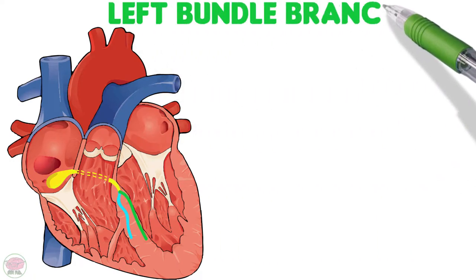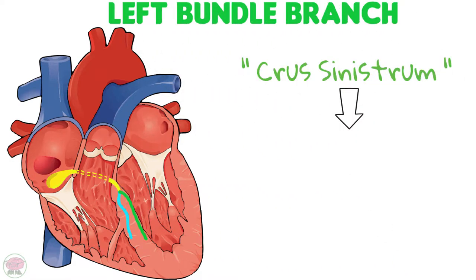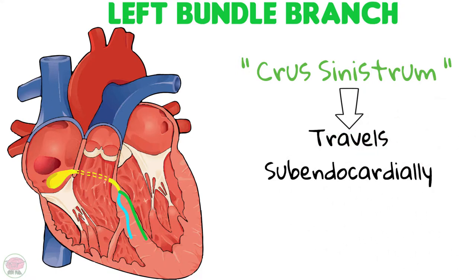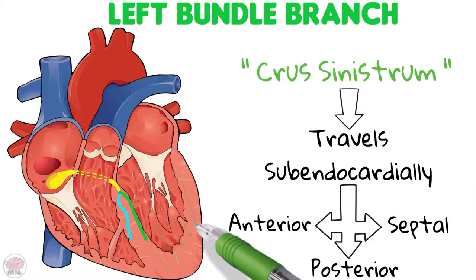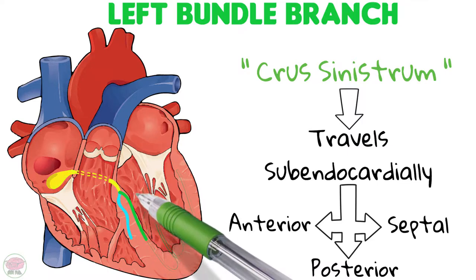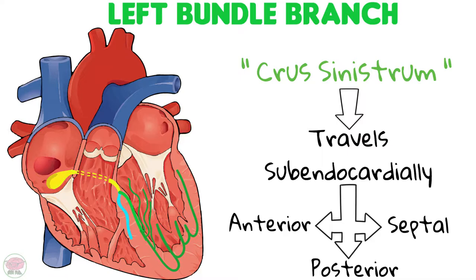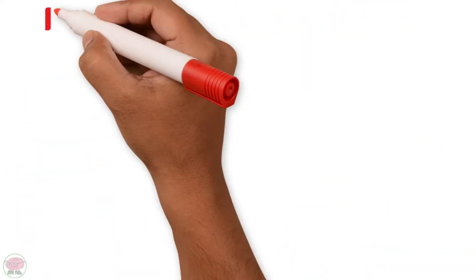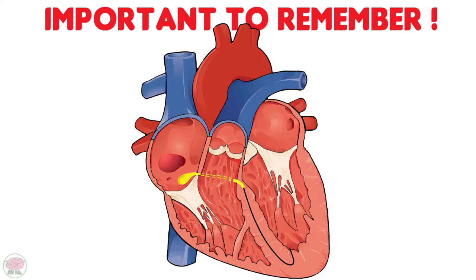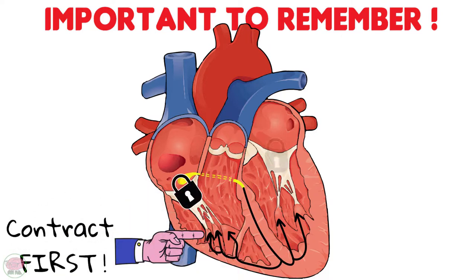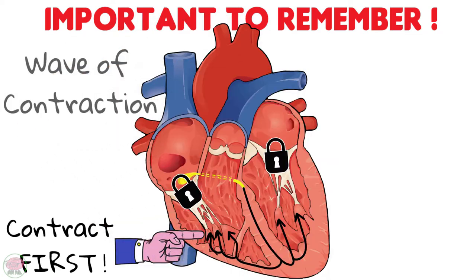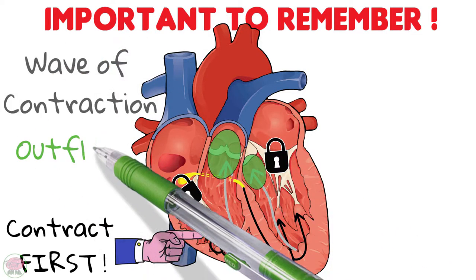The left bundle branch, also known as crus sinistrum, forms a flattened fascicle that travels sub-endocardially down the left ventricular septal surface and trifurcates into anterior, posterior, and septal divisions that create smaller sub-endocardial branches surrounding the papillary muscles and apex, distributed to all walls of the left ventricle. This distribution is important to remember because the first structures to receive branches in both ventricles are the papillary muscles — therefore they contract first, closing the valves. The next event is a wave of contraction traveling from the apex of the ventricle to the outflow tracts.